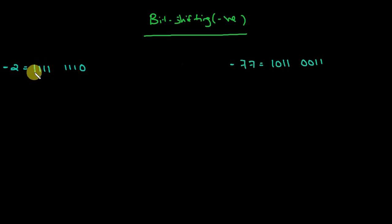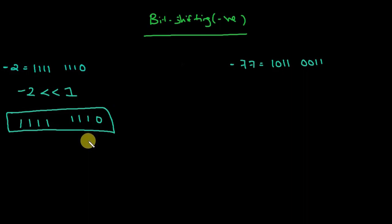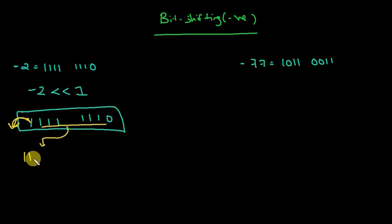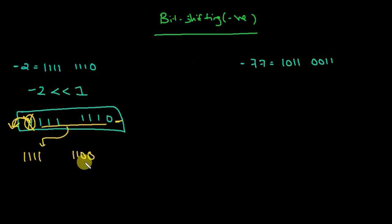First of all, what happens when we left-shift minus 2 by one time? If I left-shift it, the leftmost bit goes out of the box, and the remaining values shift over. Three ones come here, and a vacant place appears on the right, where we put a 0.